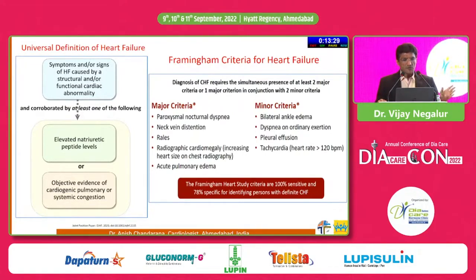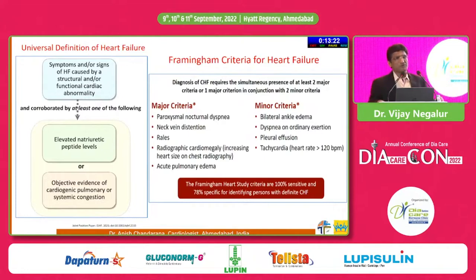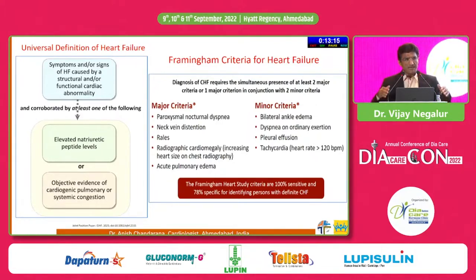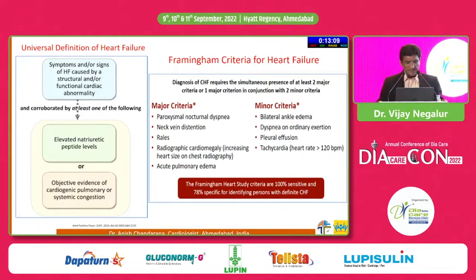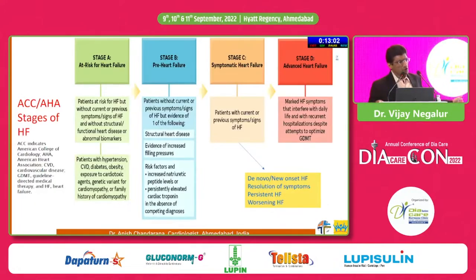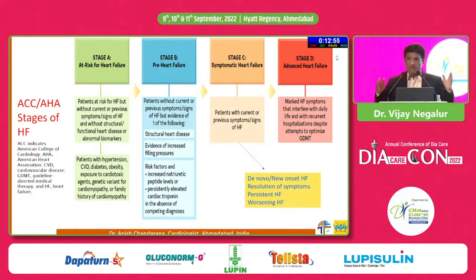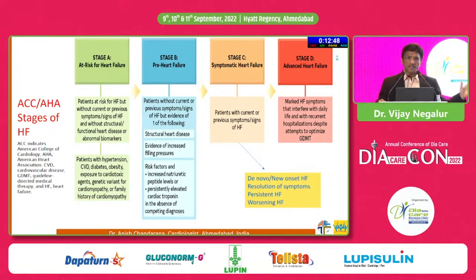Heart failure is defined as symptoms and signs caused by structural and/or functional cardiac abnormality, corroborated by at least one additional point — either elevated natriuretic peptide (a marker of elevated end-diastolic ventricular pressure) or objective evidence that pulmonary or systemic congestion is due to a cardiac issue. Staging of heart failure — stage A, B, C, D — has been in place for 15-20 years. Staging gives us a sense that if you do not arrest the process at an early stage, the patient will deteriorate. It increases the sensitivity of physicians to treat patients at each given stage.